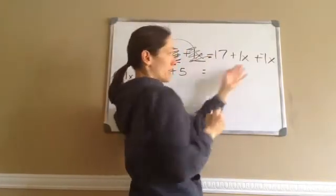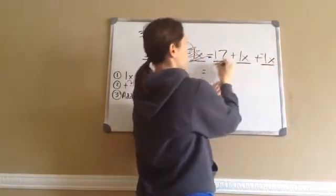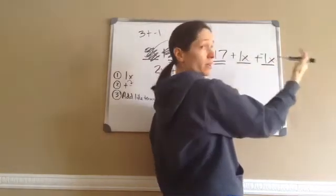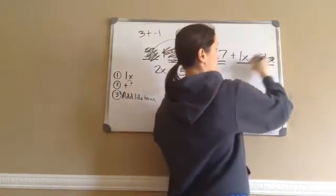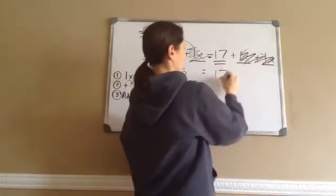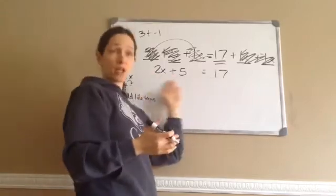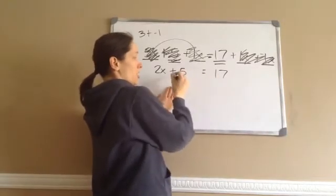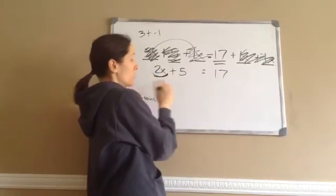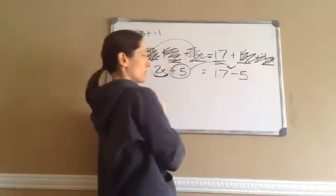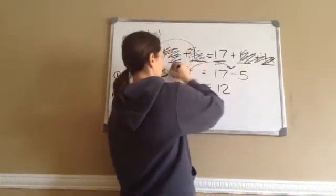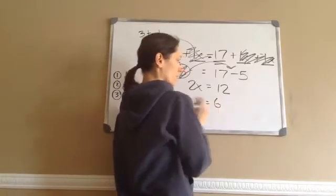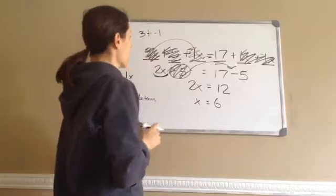Then we've got equals. On the right side, 1x plus negative 1x — 1 dog plus negative 1 dog gives me 0 dogs, so that cancels out. Then I just take 17. Now it becomes a problem you're used to: 2x plus 5 equals 17. I move plus 5 over to negative 5, giving 2x equals 12. So x equals 6. 2 times 6 is 12. That was the whole problem.